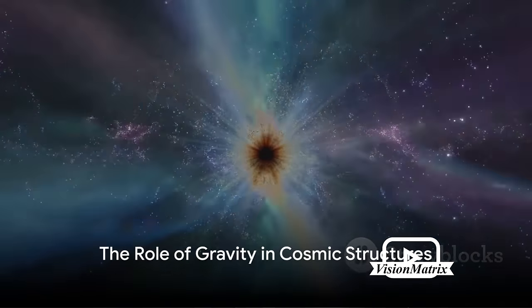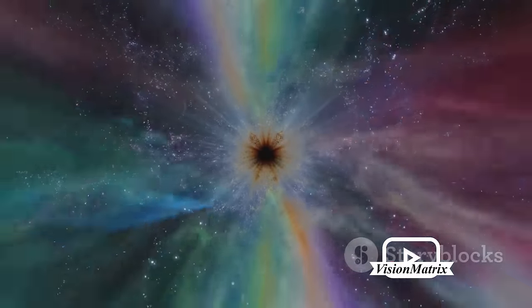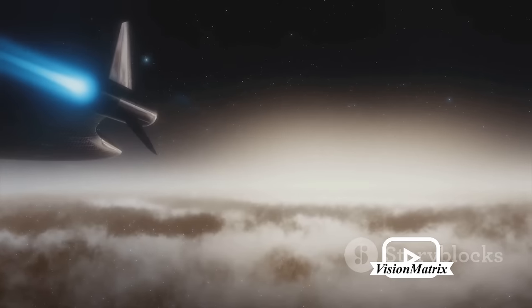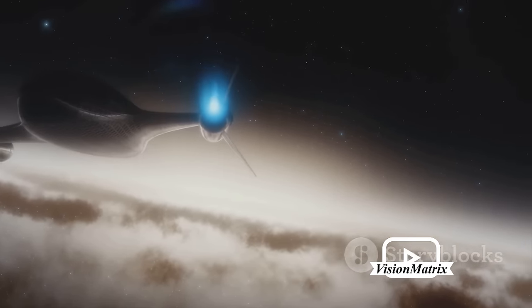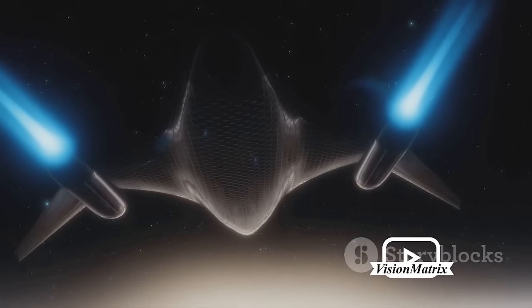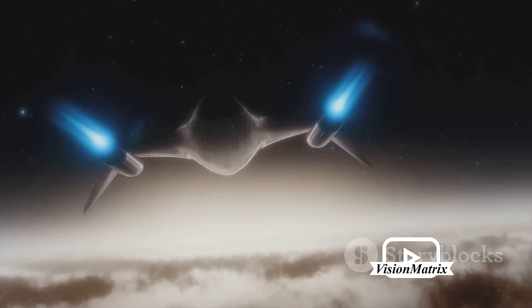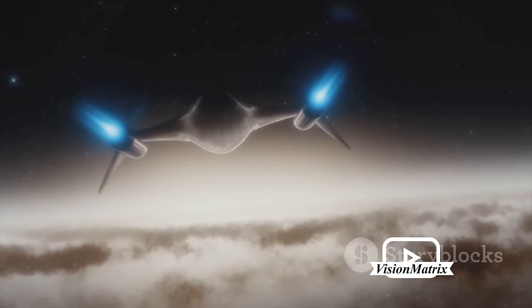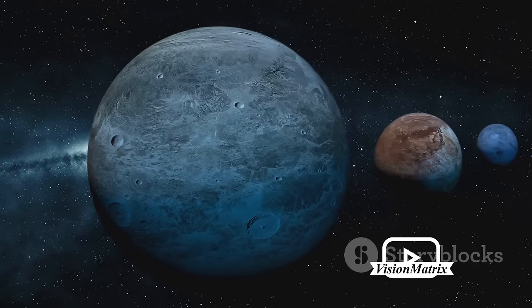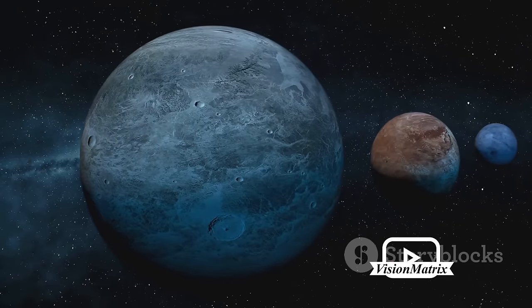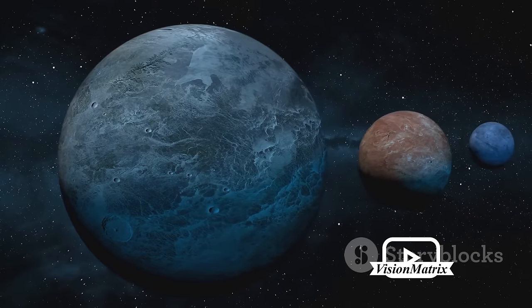Gravity, the unseen force, plays an integral role in shaping the universe. It's the silent puppeteer pulling the strings behind the magnificent cosmic ballet. Imagine for a moment a universe without gravity. Stars, galaxies and black holes simply wouldn't exist. It is gravity that pulls together the cosmic dust and gas, compressing it to form stars. These stars, in turn, group together, their collective gravity creating galaxies. But gravity's influence doesn't stop there. It shapes the orbits of planets around their stars, giving us the familiar structure of solar systems. It also governs the violent dance of binary star systems and the death spiral of matter falling into a black hole.